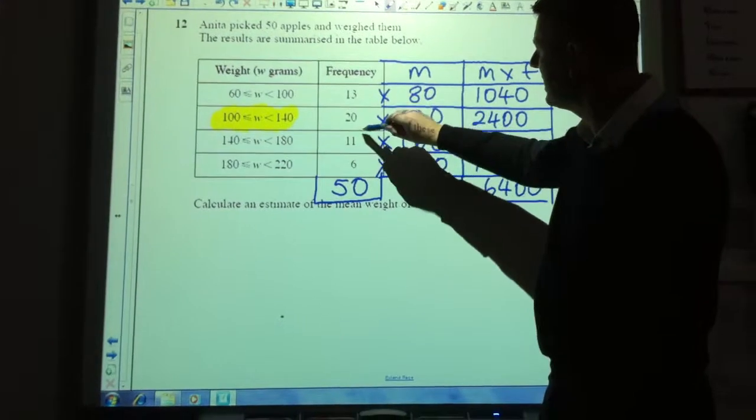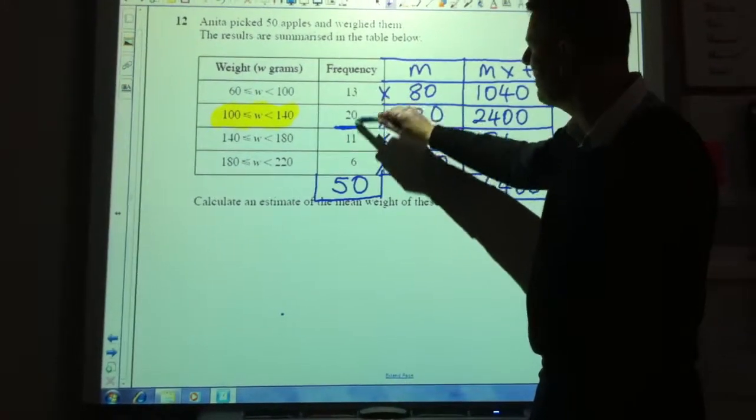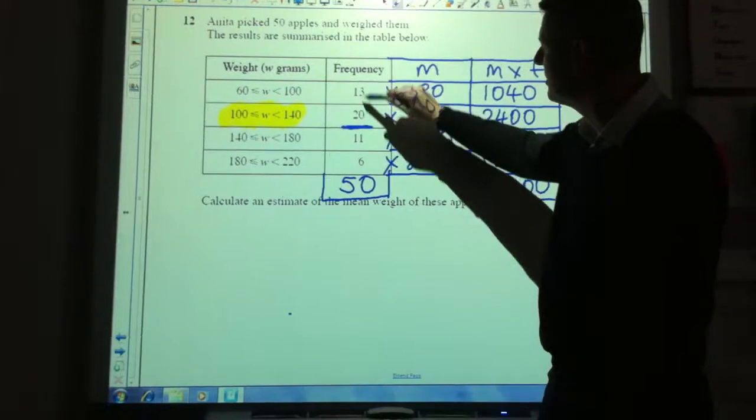and when I've gone down to here, I'll have gone past 33 apples. The 13 and the 20 are making 33 apples.